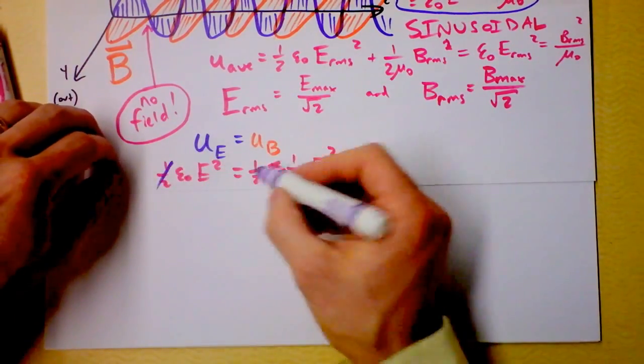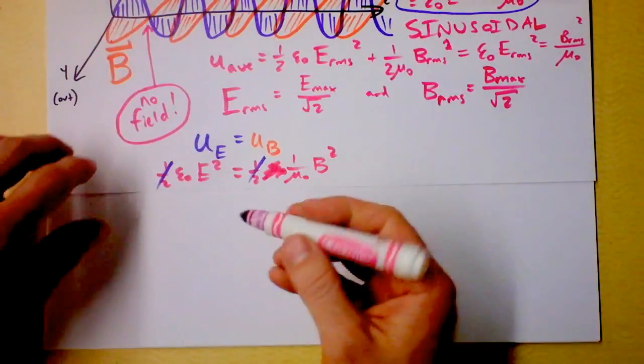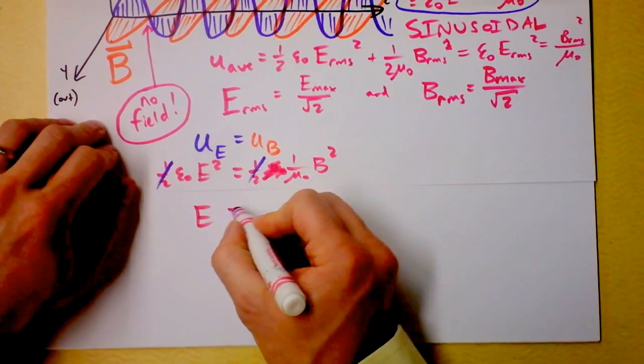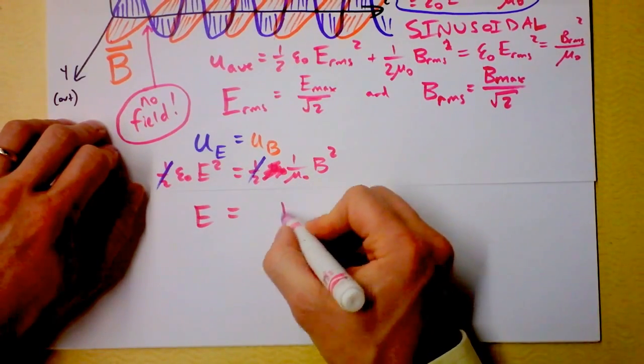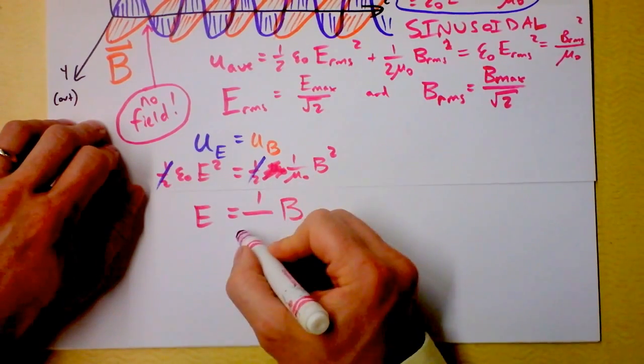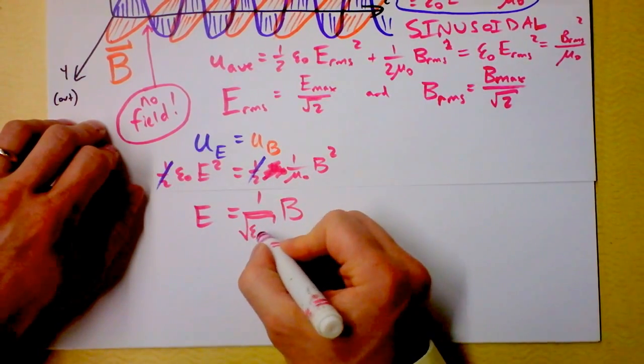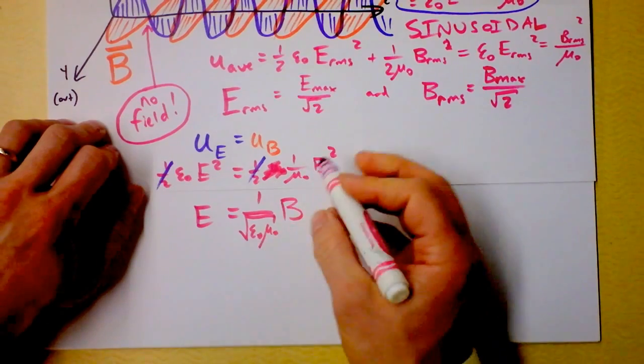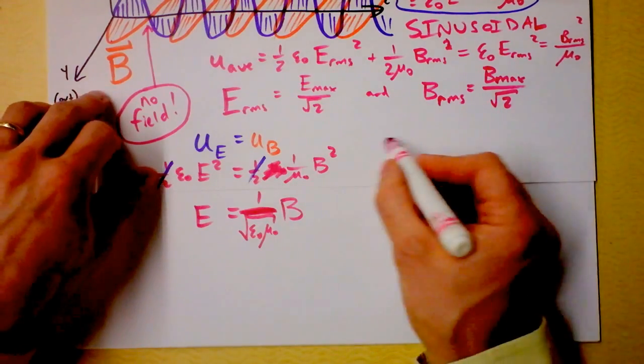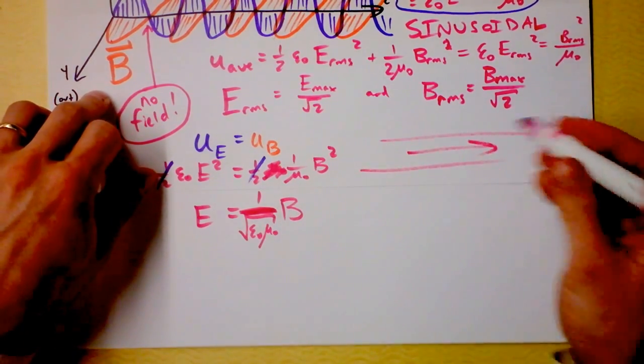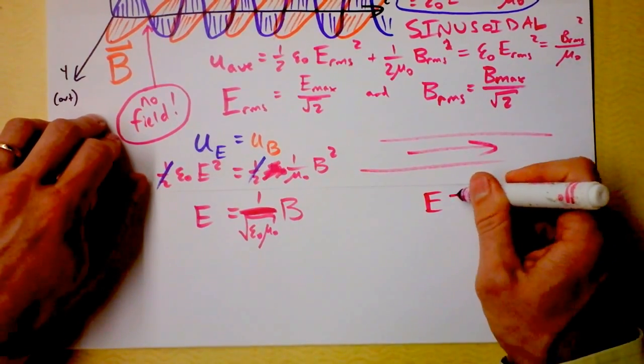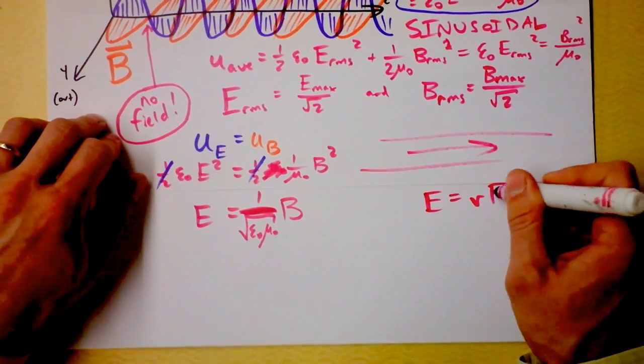I want to solve it for the electric field. E is going to be B times some stuff. Down here we've got E = B/√(ε₀μ₀). Remember when we did velocity selection for stuff moving through a wire, we found this cool property where E = vB. This thing right here is a speed.